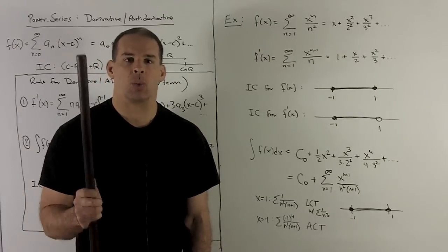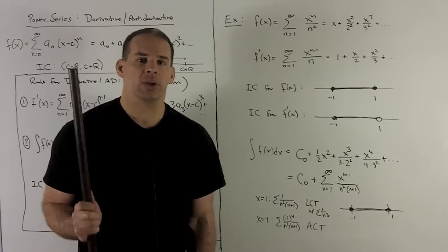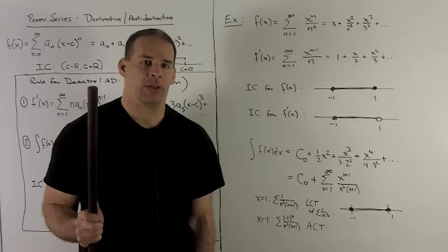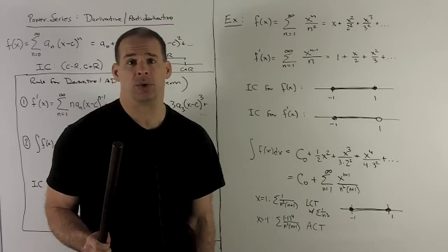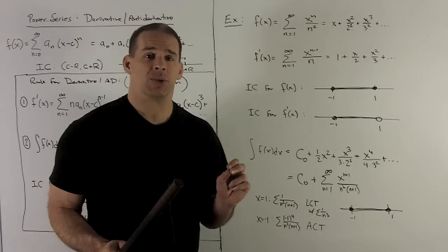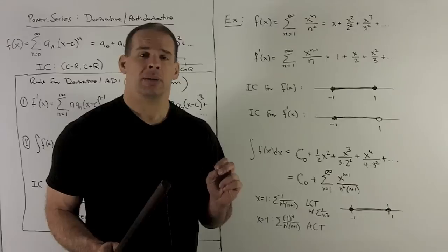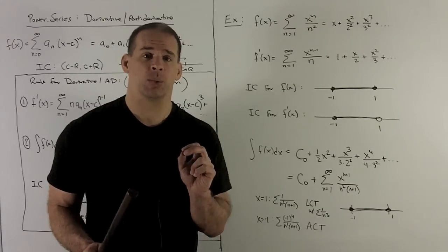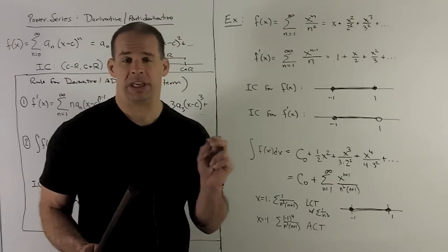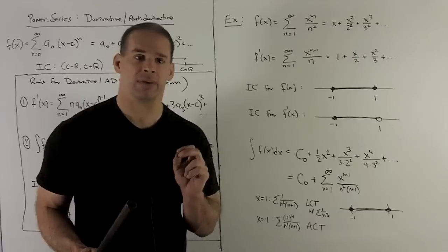So I'm going to want to use limit comparison test with our b sub n equal to one over n cubed. They're both going to converge because one over n cubed converges. That's going to be a p series with p equal to three. p is bigger than one in this case. So convergence.